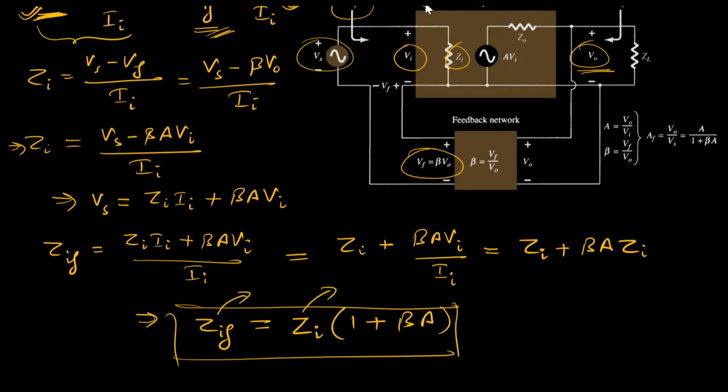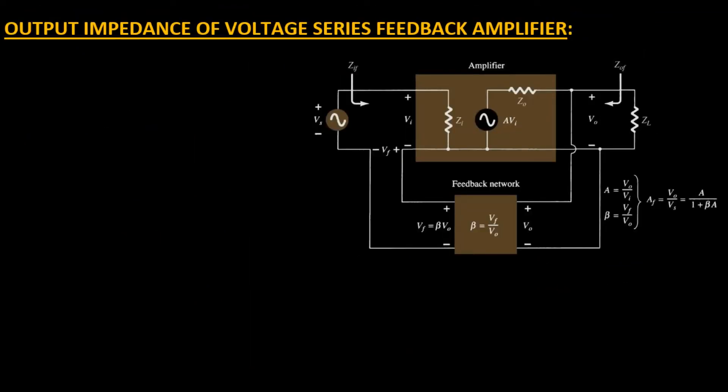This is the final input impedance value where Zi is the input impedance without feedback and Zif is with feedback. I can clearly observe that Zif is being scaled by a factor 1 plus beta·A. That's how having a series connection raises the input impedance value by this factor.